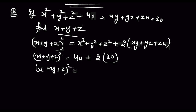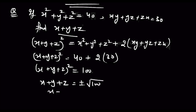देखिए कौन-कौन सी value आपके पास है: 2 into 30 is 60, plus 40 is 100। तो x plus y plus z आएगा plus minus root 100, and x plus y plus z की value आएगी plus minus 10।